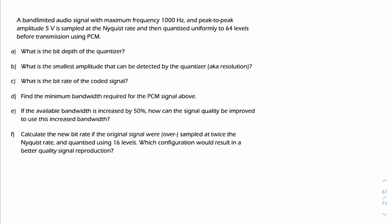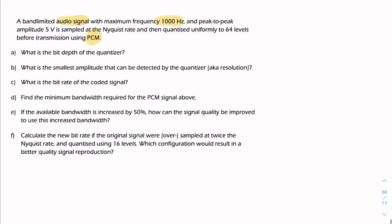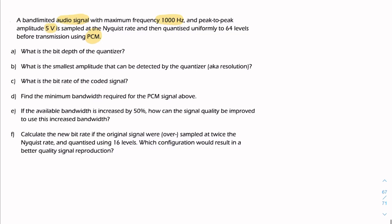This is a question about the sampling, quantization, and pulse code modulation of an audio signal. We're told that the audio signal is band-limited to 1 kHz, we're given the peak-to-peak voltage of 5 volts, and we're told about the quantizer with 64 levels.